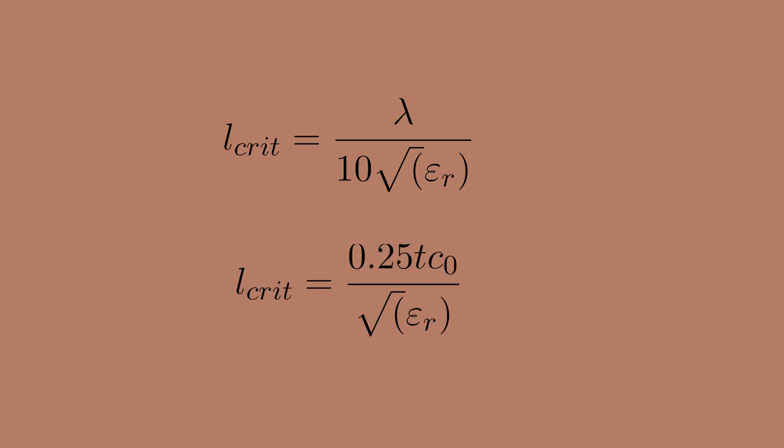A similar rule of thumb equation exists for digital signals, where instead of the wavelength, the rise or fall time, whichever one is smaller, is being used to calculate the critical length. But just how true is the claim that below this critical length all transmission line effects can be completely disregarded?